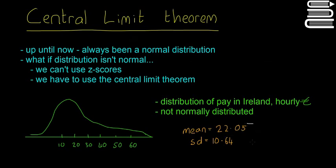Even though the data isn't normally distributed, you can still have a mean and standard deviation — all data is going to have one. But it just doesn't follow the empirical rules, so it's not as useful for non-normal distributions, but it's still useful.